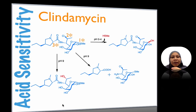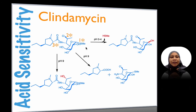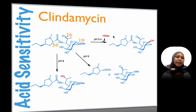Now, a brief look at the chemistry of lincomycin. At a strong acidic pH of 0 to 4, the methylthio group on the sugar moiety will be removed and displaced with an OH group.